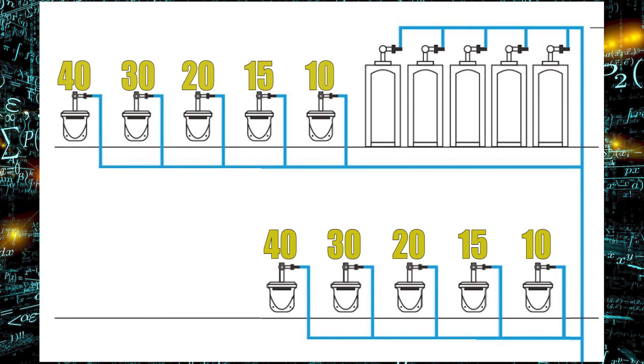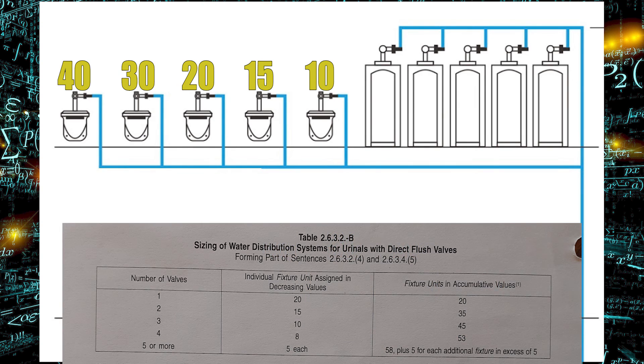Now the urinals up top though, we need to look at table 2632B. So this one on the far left is going to be 20 fixture units, the next one is 15, the next one is 10, the next one is 8, and the last one is five.